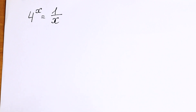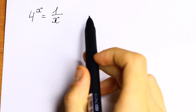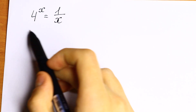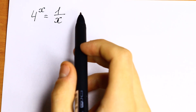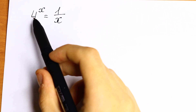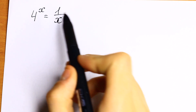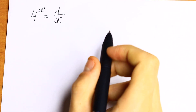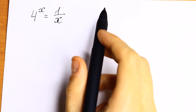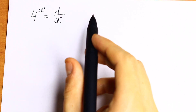Hello everyone, welcome back to HiMS. Today we have an interesting equation: 4 to the power x equals 1 over x. This equation is really hard because we have x in our exponent and x in our denominator, but I want to show you how to solve this easily.